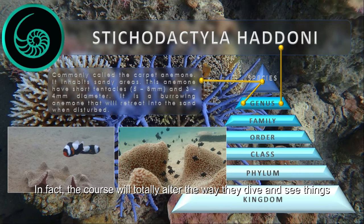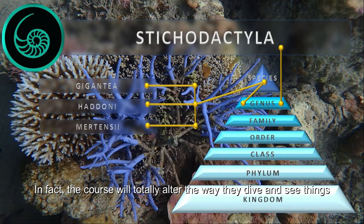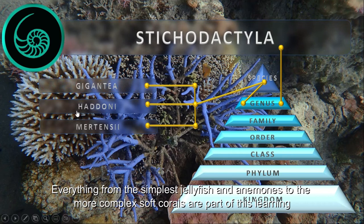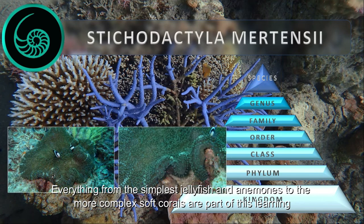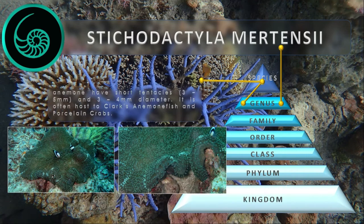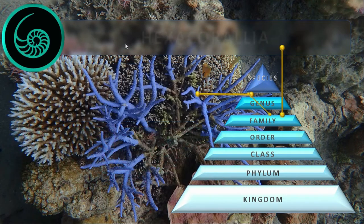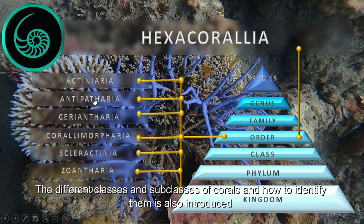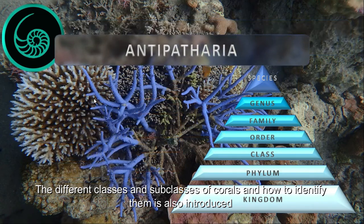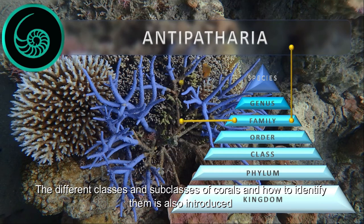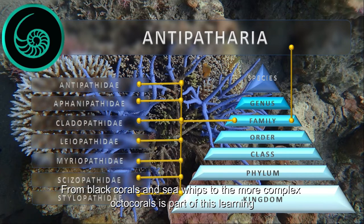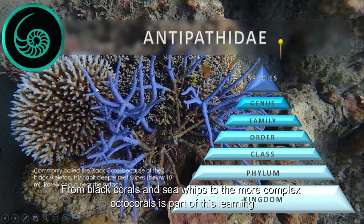In fact, the course will totally alter the way they dive and see things. Everything from the simplest jellyfish and anemones to the more complex soft corals are part of this learning. This instills the knowledge that most things they see on tropical reefs are largely part of the family of corals. The different classes and subclasses of corals and how to identify them are also introduced — from black corals and sea whips to the more complex octo corals.